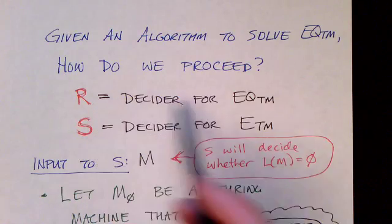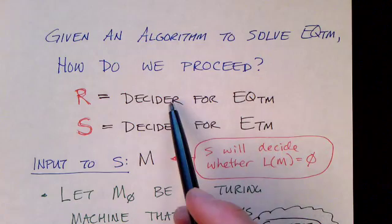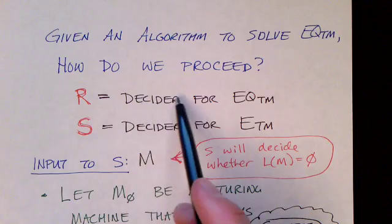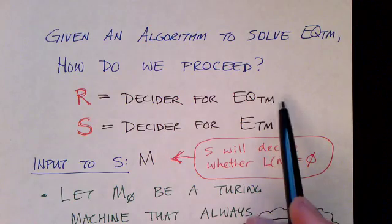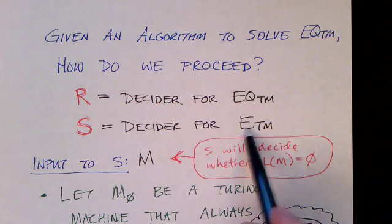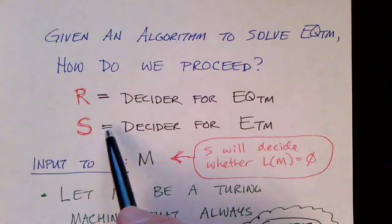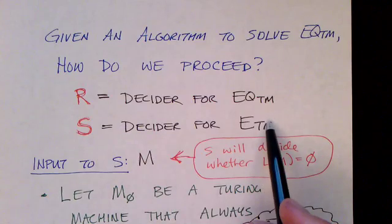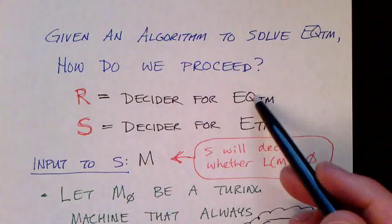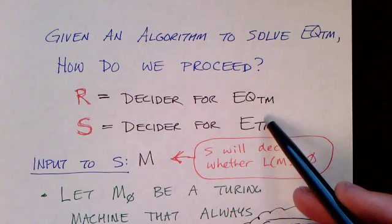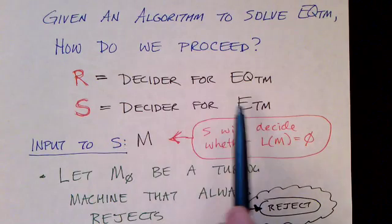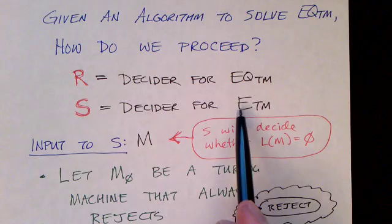Let's be careful about the logic of this proof. We want to show that EQTM is undecidable. We're going to assume that we have a decider R — an algorithm to decide the equivalence of two Turing machines. We'll show that if we had that, we could construct a decider S for the emptiness test for Turing machines. But we know ETM is undecidable, so S can't exist. Therefore, given an algorithm R to decide EQTM, we construct a decider S for ETM — but S can't exist, so R can't exist.